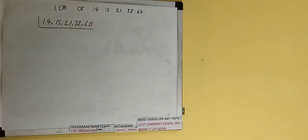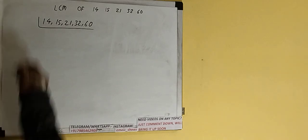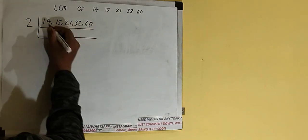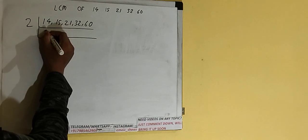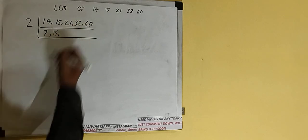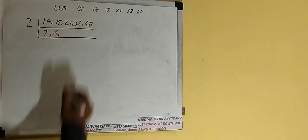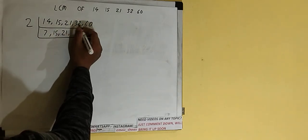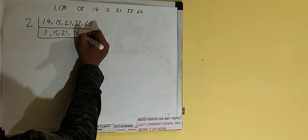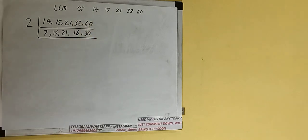Next, we need to start with the lowest prime number, 2, and check if any of the numbers are divisible or not. All even numbers are divisible by 2. The first number 14 is even, so it becomes 7. The second number, 15, is not divisible, so we copy it down. The third number, 21, is also not divisible, so we copy it down. 32 is even, so it becomes 16, and 60 becomes 30.